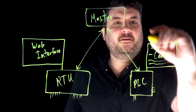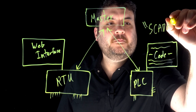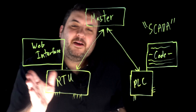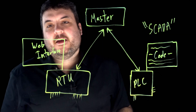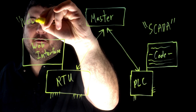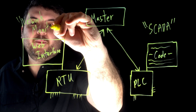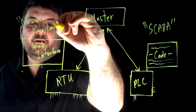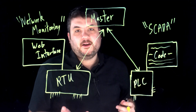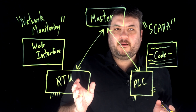We commonly see PLCs in what we call the more SCADA environment. RTUs really straddle the line — you'll see them in SCADA, but also in what we call a network monitoring context, where you might be monitoring substations at a power utility or microwave repeaters and tower sites in a telco.